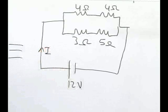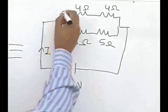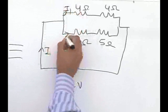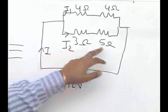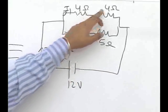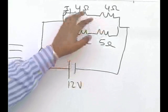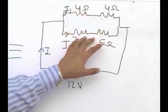Now, there is a current I which is going into the circuit and divides into I1 and I2. Next, we see in this diagram that 3 and 5 are in series, 4 and 4 are also in series. So overall, this thing is in parallel to this one.